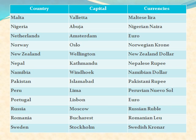Mexico: its capital is Mexico City and currency is Mexican Peso. Malta: its capital is Valletta and currency is Maltese Lira. Nigeria: its capital is Abuja and currency is Nigerian Naira. Netherlands: its capital is Amsterdam and currency is Euro. Norway: its capital is Oslo and currency is Norwegian Krone. New Zealand: its capital is Wellington and currency is New Zealand dollar. Nepal: its capital is Kathmandu and currency is Nepalese Rupee.